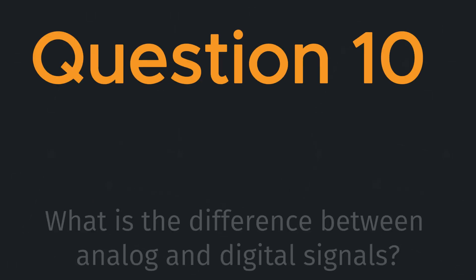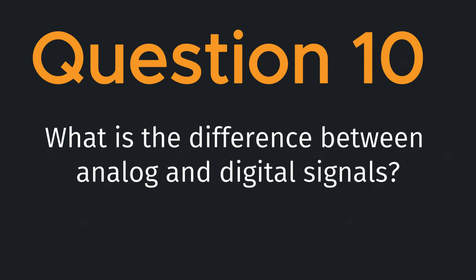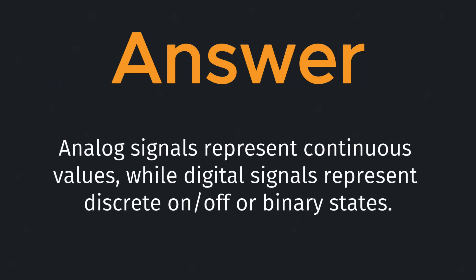Question ten: what is the difference between analog and digital signals? Analog signals represent continuous values, while digital signals represent discrete on/off or binary states.